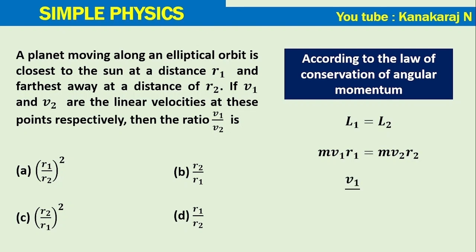We find v1 by v2 from this equation: v1 by v2 equals r2 by r1. More is the distance, less will be the velocity.